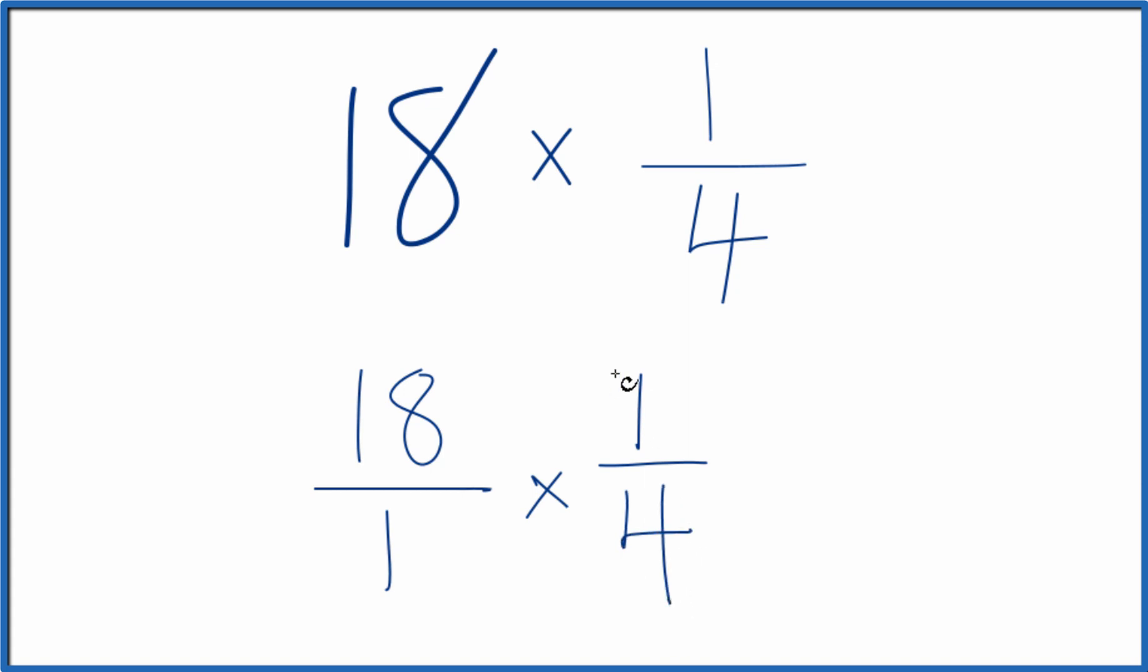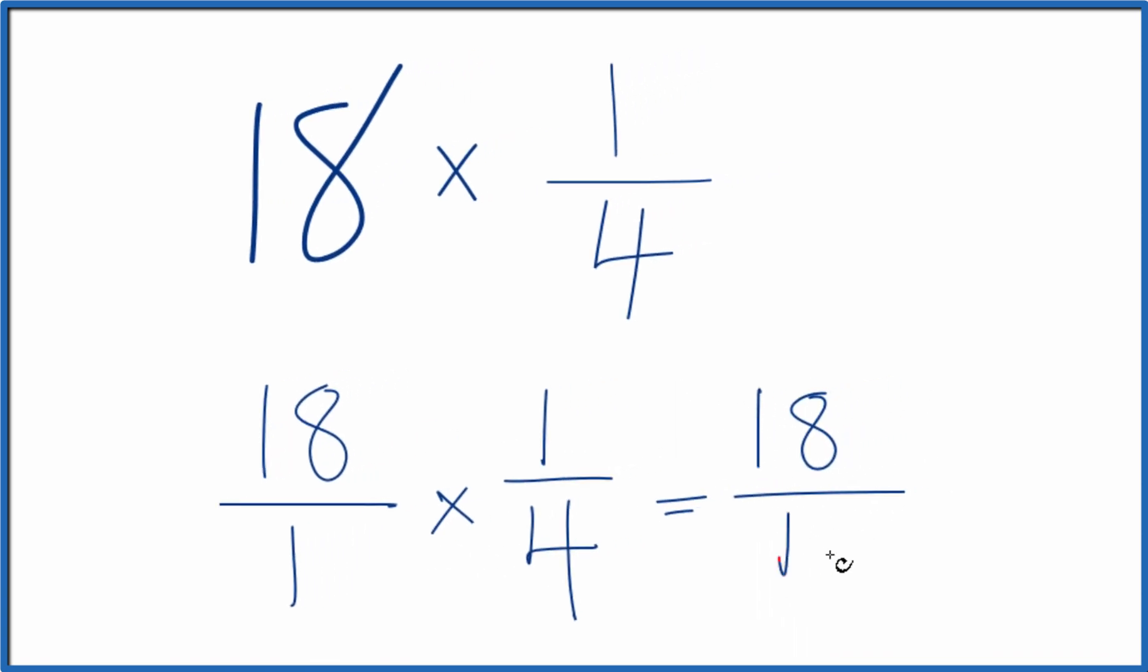When we multiply fractions, we multiply the numerators, then the denominators. So 18 times 1, that's 18. 1 times 4, that's 4. So 18 times one-fourth equals 18 fourths.